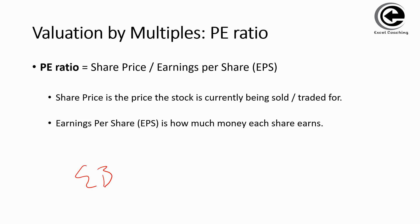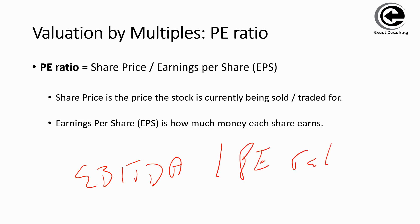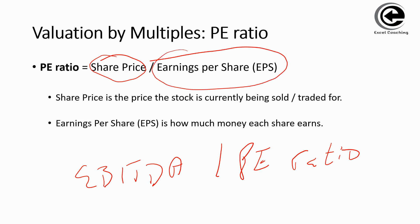Examples of multiples are EBITDA and PE ratio. In this particular recording, we'll focus on PE ratio multiples. So first, let's understand what PE ratio means before we look at its application. PE ratio, or price earnings ratio, is basically share price divided by earnings per share.